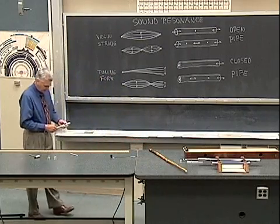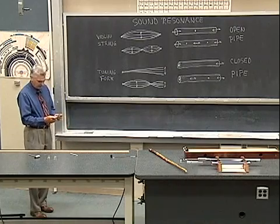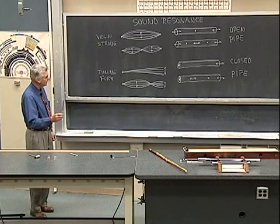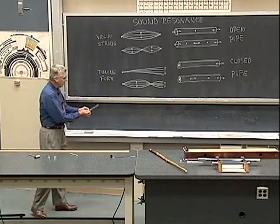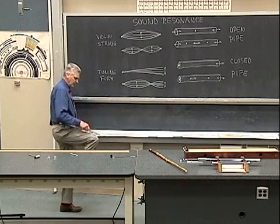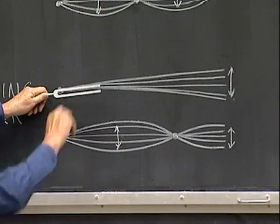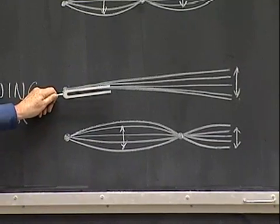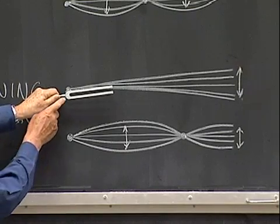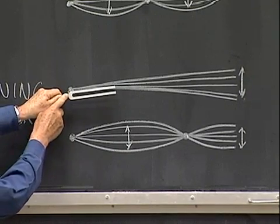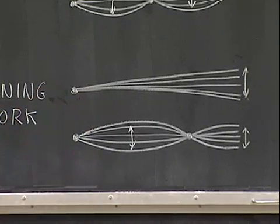Here is an actual tuning fork. This happens to be a frequency of 256 cycles per second, and as this tuning fork oscillates in its fundamental frequency, the prongs move toward and away from one another. But let's just talk about one of those prongs. The fixed end would be a node and the free end would be an anti-node.